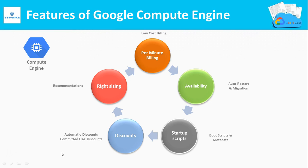These are some features of Google Compute Engine. First is billing — GCP bills your machines on a per-minute basis. For example, if you run a machine for 62 minutes, you pay for 62 minutes alone. Some cloud providers bill hourly, so for 62 minutes you'd pay for two hours. In Google, availability is higher with the help of auto-restart and migration features. You can also run startup scripts in your virtual machines.